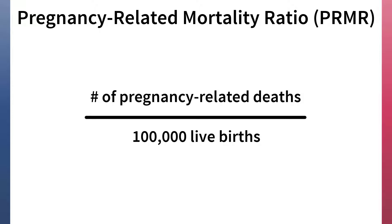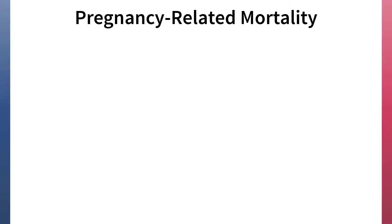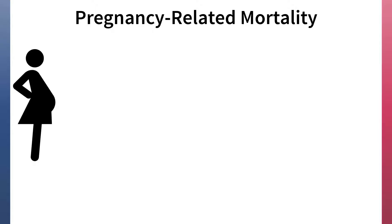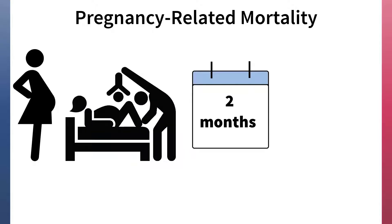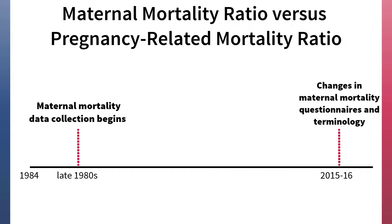The DHS program defines pregnancy-related mortality as deaths to women while pregnant, during childbirth, or within two months of delivery or end of pregnancy. Pregnancy-related deaths include deaths from any cause during this time period. To learn more about the differences between pregnancy-related and maternal mortality in DHS surveys, check out our video on this topic.